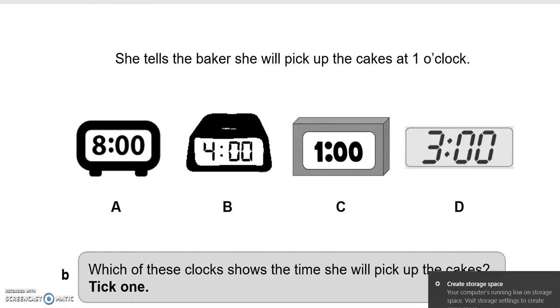She tells the baker she will pick up the cakes at 1 o'clock. Which of these clocks shows the time she will pick up the cakes? Tick one. So this is showing 1 o'clock.